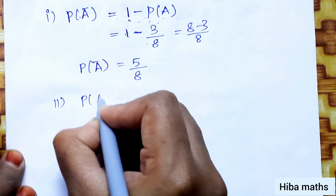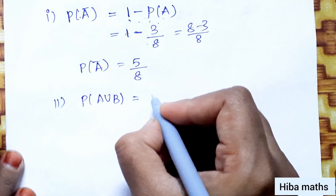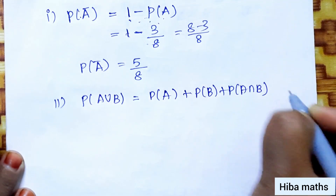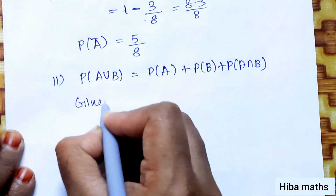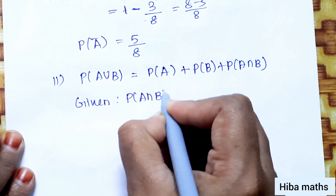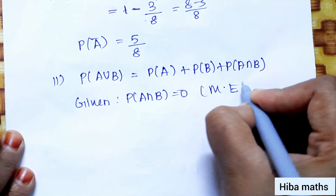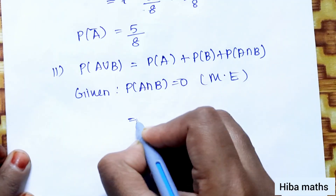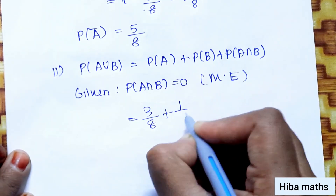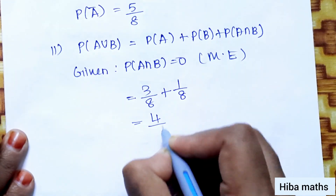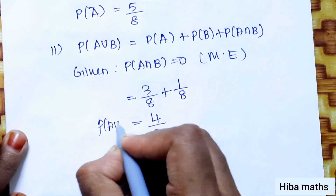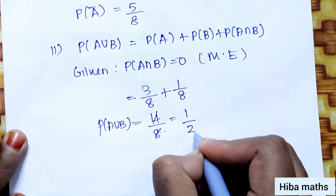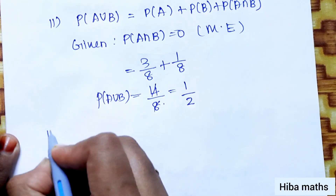Second subdivision: P of A union B. The formula is P of A plus P of B plus P of A intersection B. But we have the condition that P of A intersection B is 0, since mutually exclusive. So P of A union B equals P of A plus P of B, that is 3 by 8 plus 1 by 8, equal to 4 by 8, which simplifies to 1 by 2.